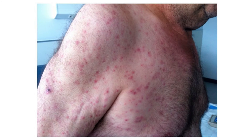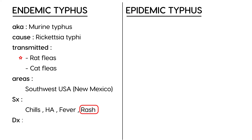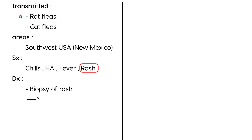Here's another patient showing macules that appear pink or red. In terms of diagnosis, you can do a biopsy of the rash, which can help detect the rickettsia organism. In terms of treatment, it is treated with an antibiotic, most commonly doxycycline.